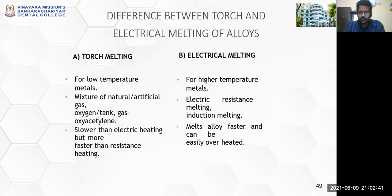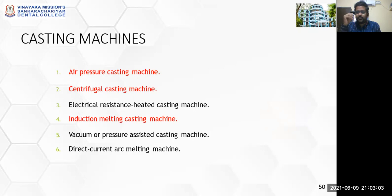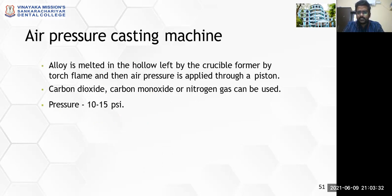Once the alloy is melted, it must be forcefully gushed into the mold space created for casting. You have different types of casting machines: air pressure casting, centrifugal casting, electrical resistance heater casting, induction melting casting, vacuum pressure, and direct current arc machines. Most commonly used are air pressure, centrifugal, and induction casting machines. For air pressure casting, the alloy is melted by a torch flame and then air pressure is applied through a piston using carbon dioxide, carbon monoxide, or nitrogen gas at a pressure of 10 to 15 — though this is not generally used in most places.